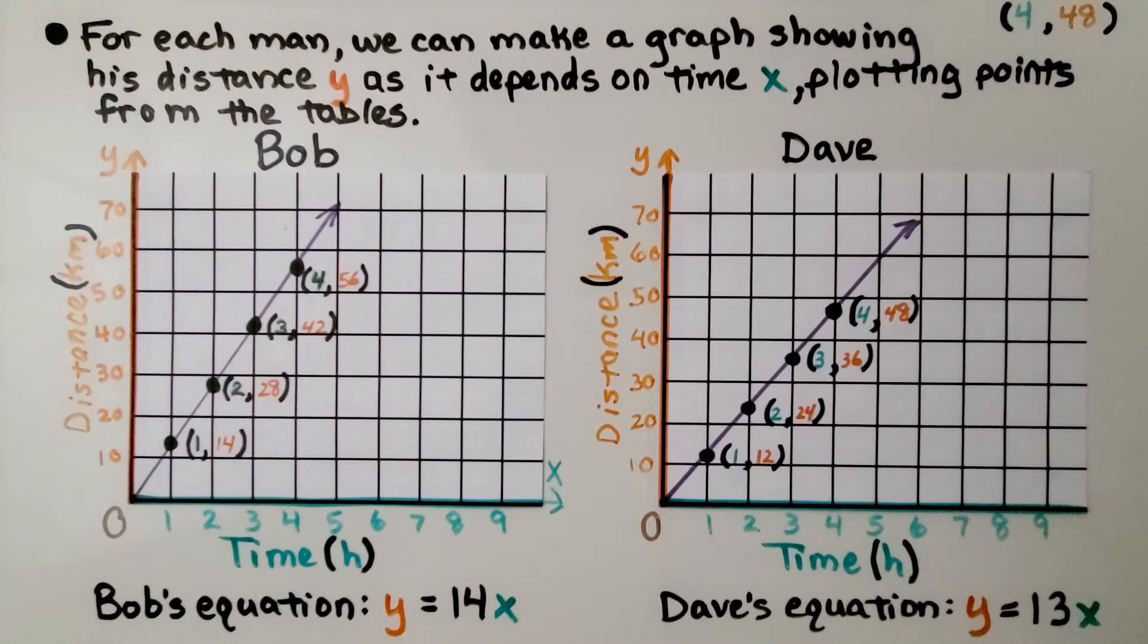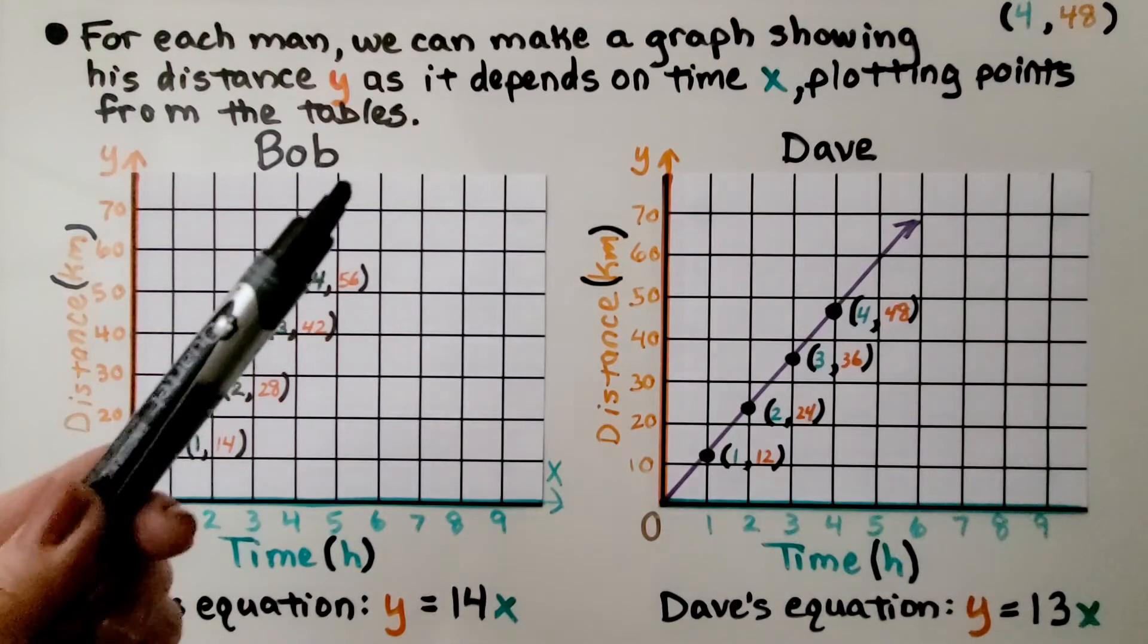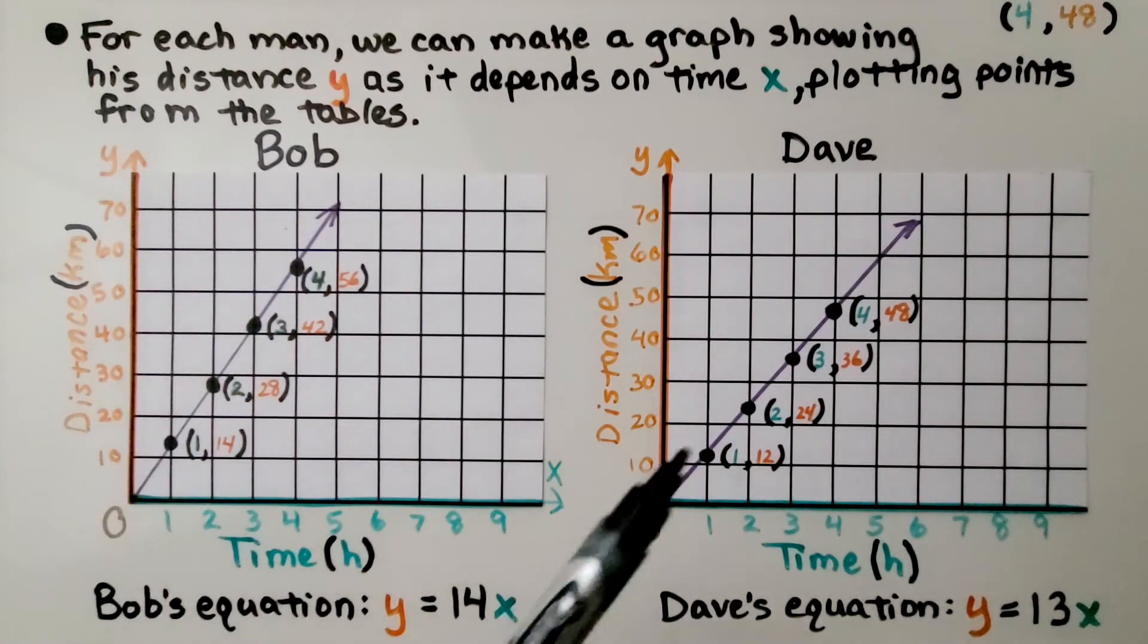We can use the data in the graphs to determine which man is running faster by the steepness of the lines. Bob's line is actually steeper by a little bit than Dave's. But for this comparison, it's easier to see who runs faster from the tables because using the graphs, it's difficult to compare steepness when they're only slightly different.